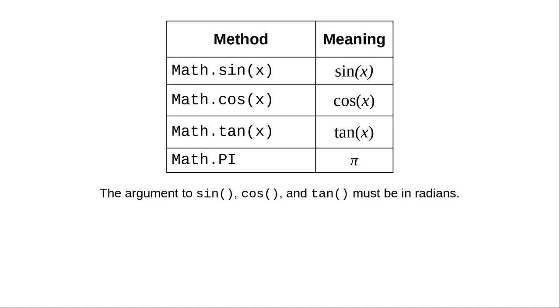Here are some of the trigonometric methods, plus the constant pi. These methods take their argument in radians, not in degrees.